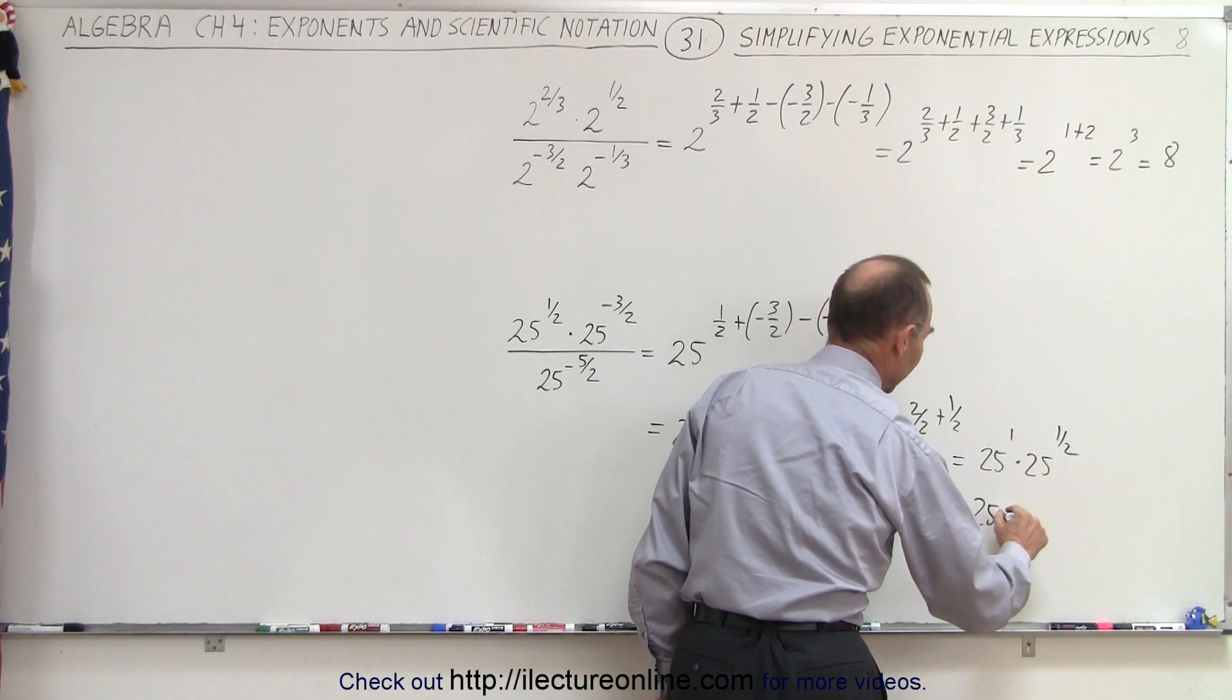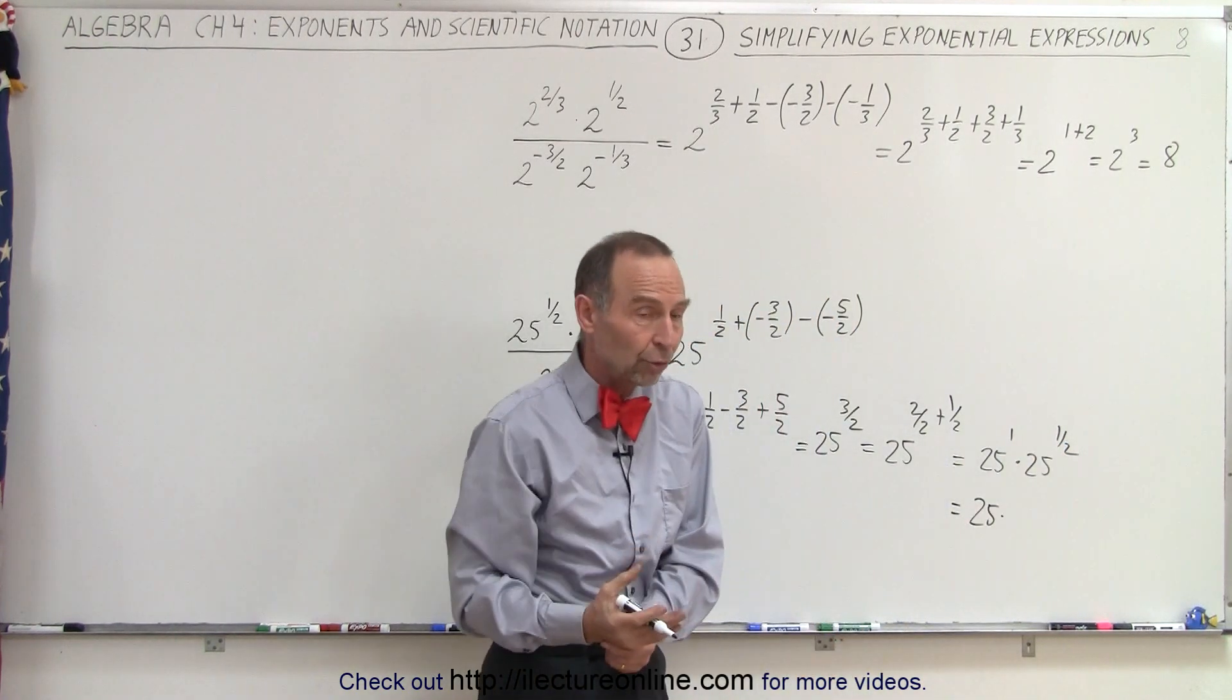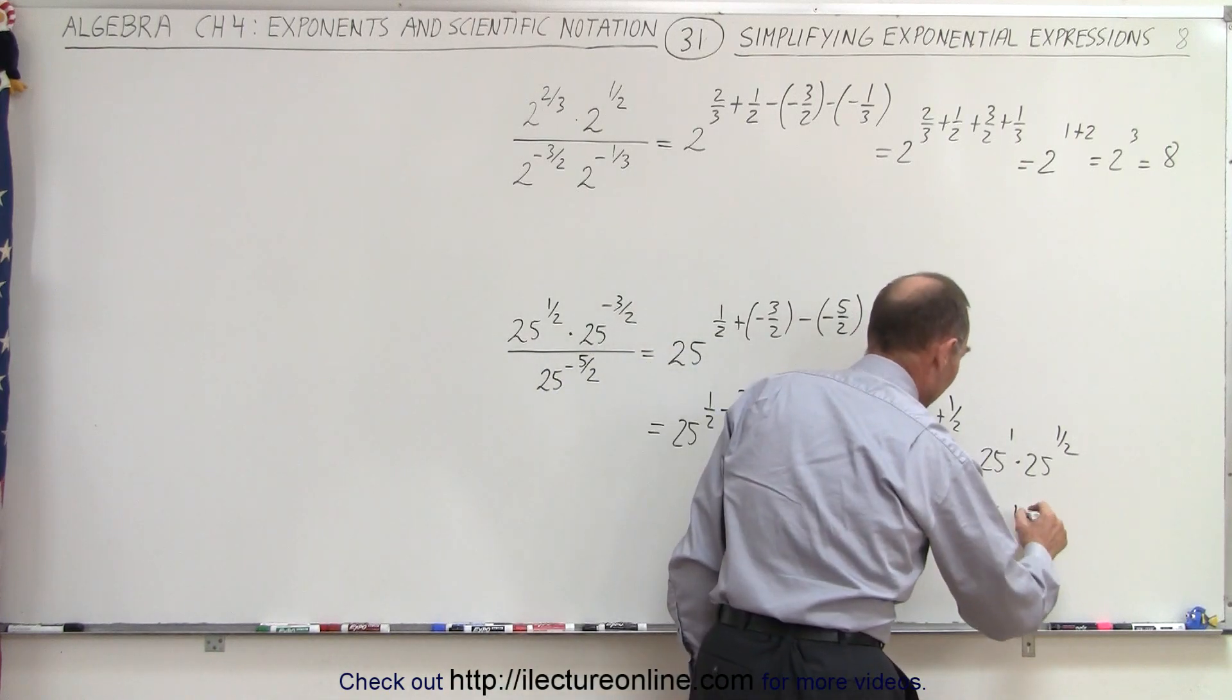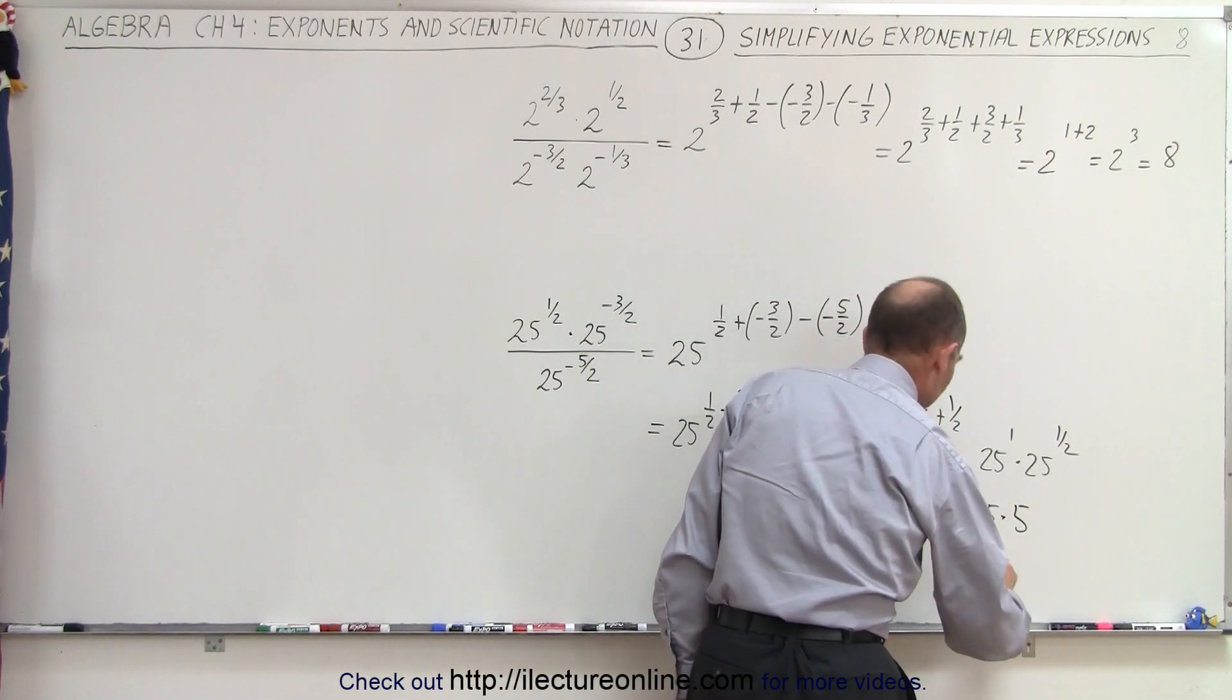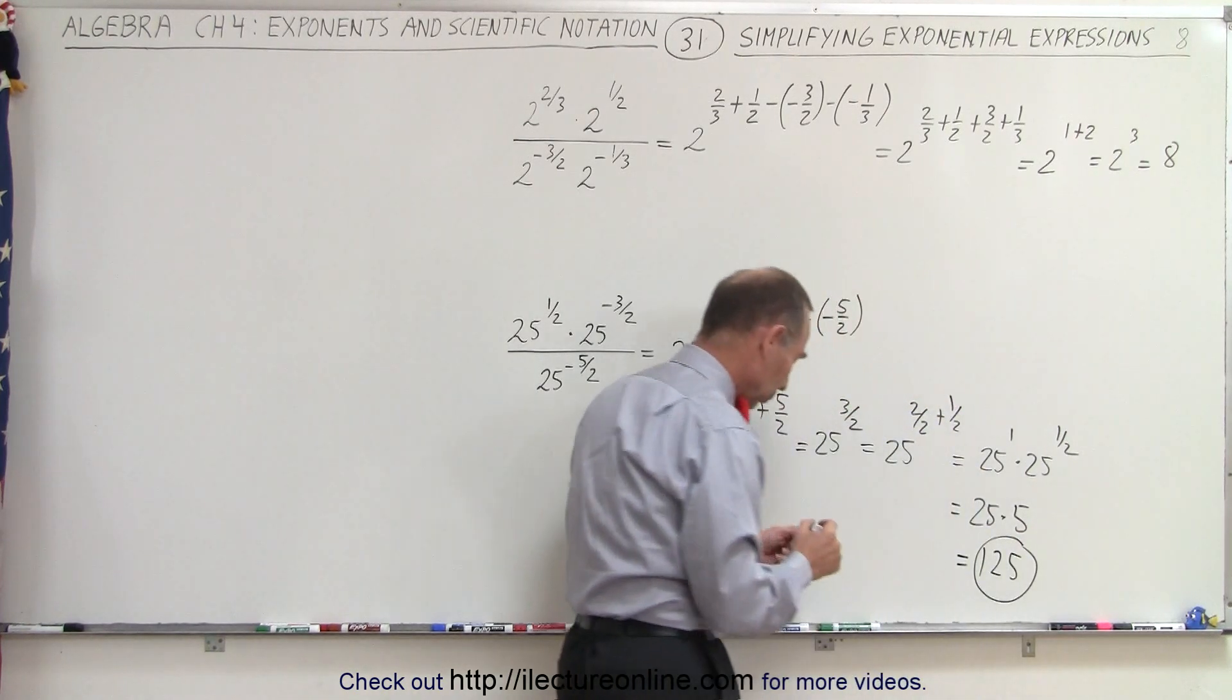And so this would be equal to 25 times 25 to the 1 half power. That's like taking the square root of 25, which is 5. And 25 times 5 would be equal to 125 as the final result.